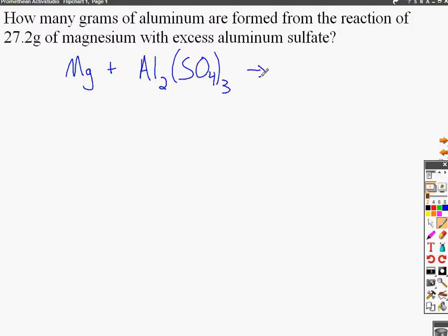This is a single replacement reaction where magnesium will attempt to replace the aluminum from aluminum sulfate. To find out if this reaction will even take place, we need to look at the activity series of the metals. Magnesium is more active than aluminum, so yes, this reaction will take place. Always make sure to check that.